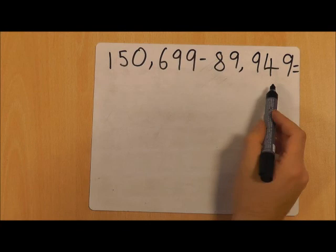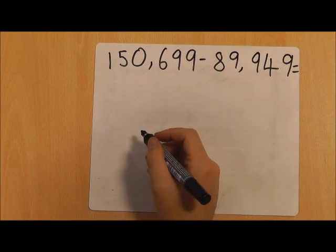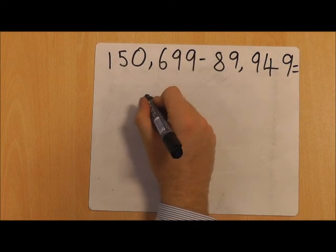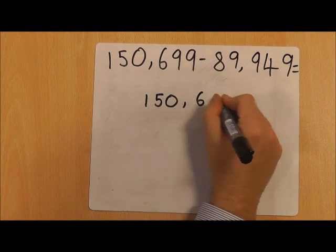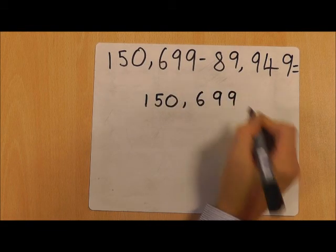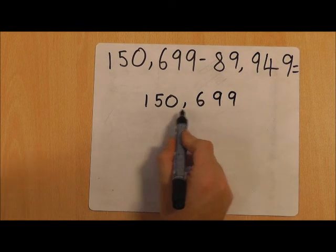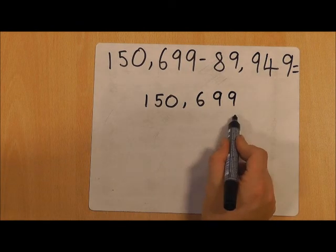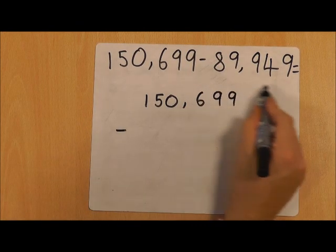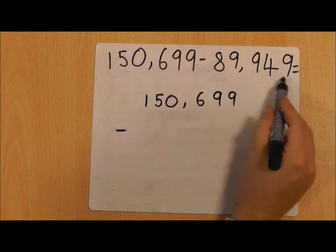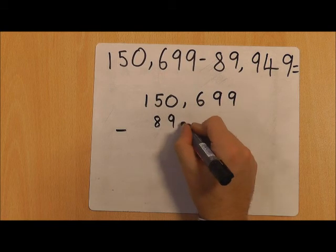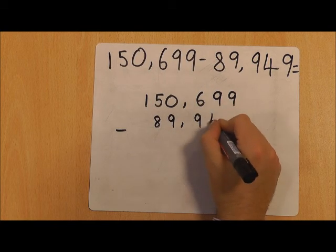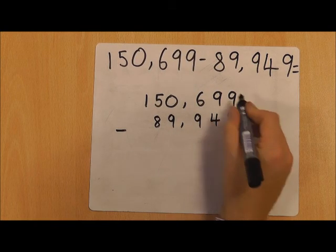We're now going to use column subtraction to subtract more complicated numbers. As with all of our subtractions, we're going to put the largest number into place value columns first. So we have 150,699 subtract the smaller number which is 89,949.